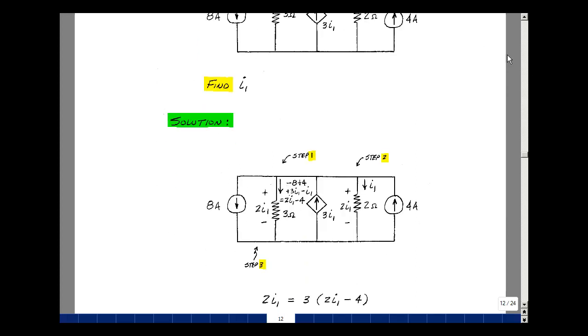We treat control sources like any other source, except that their value depends on another voltage or current.